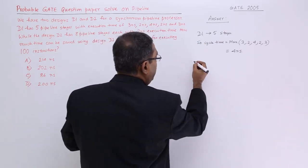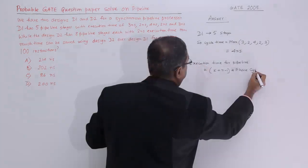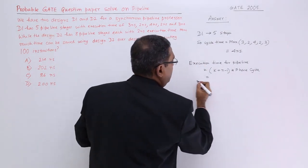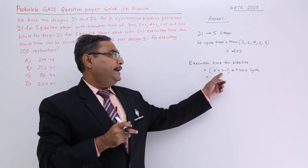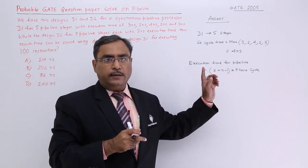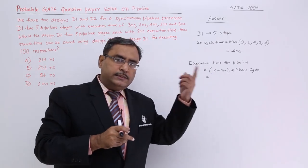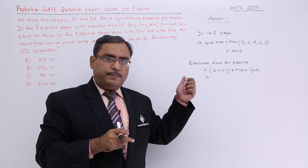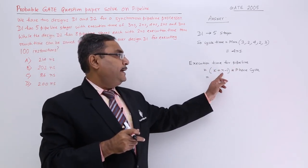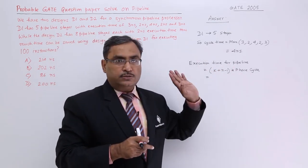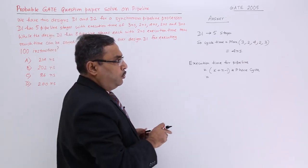We know that execution time for a pipeline is equal to K plus N minus 1 into phase cycle. Each and everything we have discussed in the earlier videos where we have discussed the pipeline architecture. Execution time for pipeline will be K plus N minus 1 into phase cycle. That is the execution time.